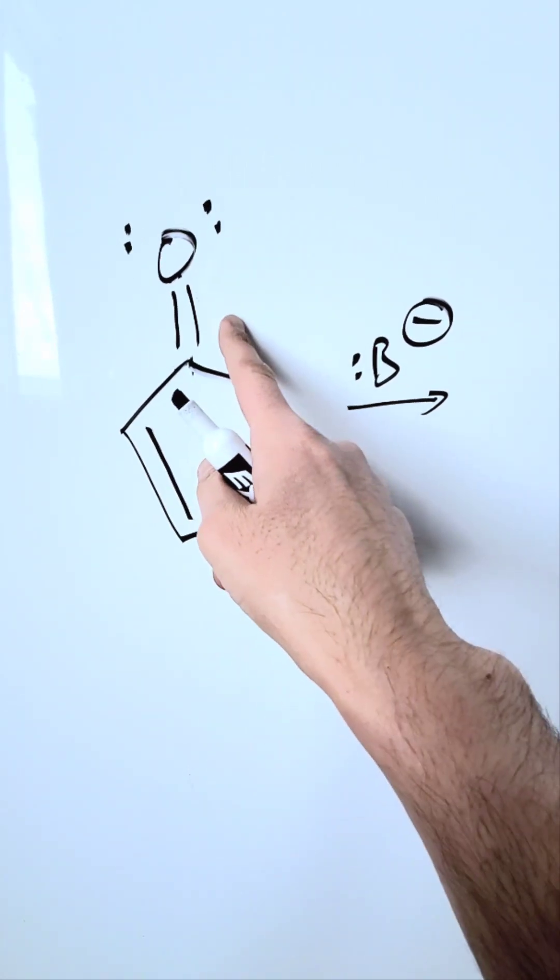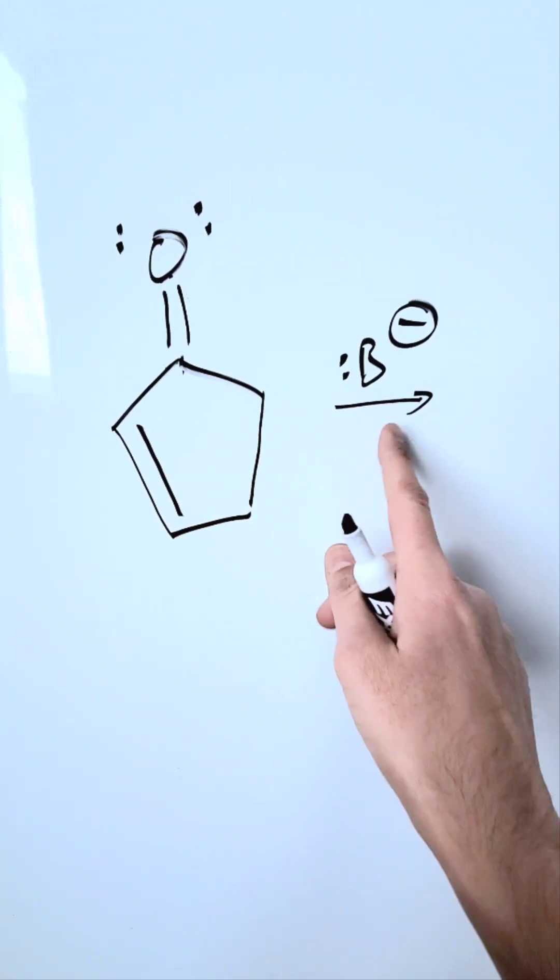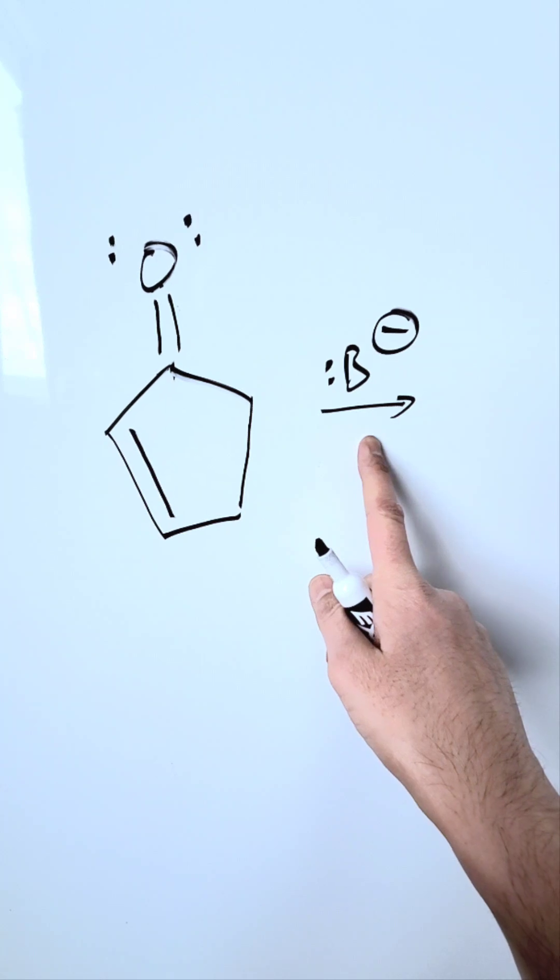Look over here at this cyclic compound. There's a ketone functionality and an alkene. I am looking at it in the presence of a very strong base.